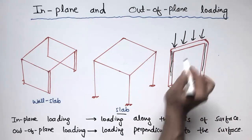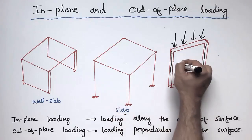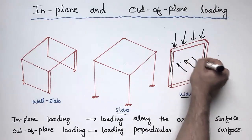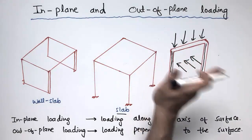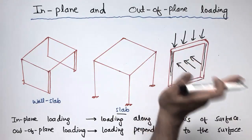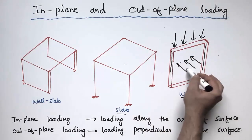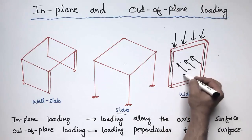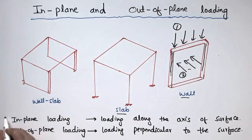The loading acting along the axis is known as in-plane loading. While if the load is acting perpendicular to the surface of the wall — such as a lateral load like wind load or earthquake load — the loading perpendicular to the surface is called out-of-plane loading. So load 1 is in-plane loading and load 2 is out-of-plane loading.